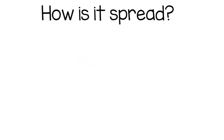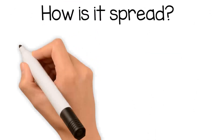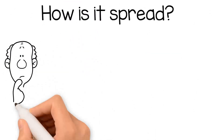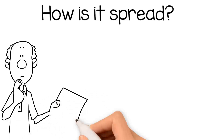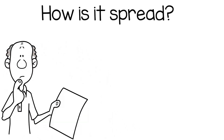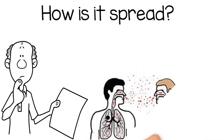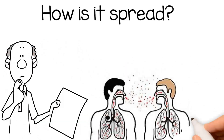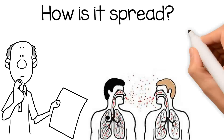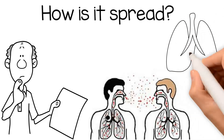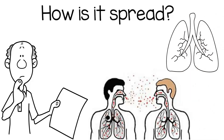How is it spread? TB is spread when an infected person releases droplets that contain the bacteria through a cough or sneeze, which are then breathed in by another person. Once breathed in, TB infects the lungs.